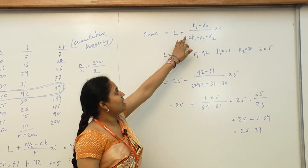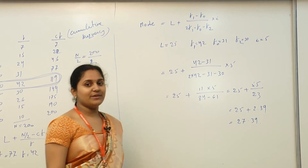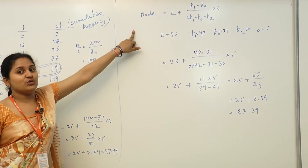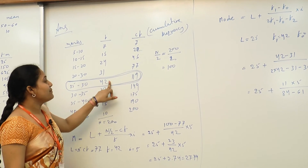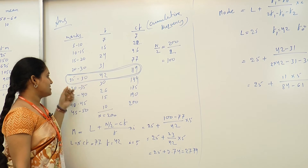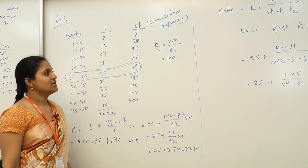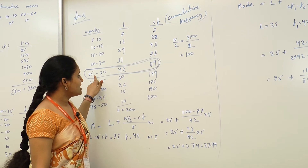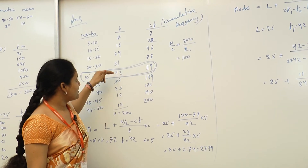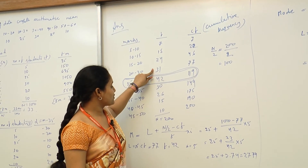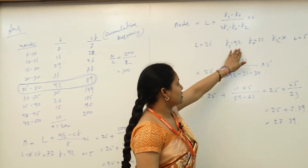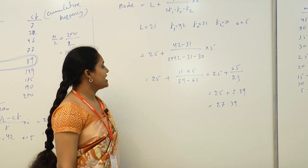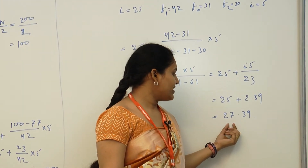Substituting values into the median formula: Median = 25 + ((100 − 77) / 42) × 5 = 27.74. For mode, the formula is: Mode = L + ((f₁ − f₀) / (2f₁ − f₀ − f₂)) × i. Since 42 is the maximum frequency, the modal class is 25–30. Here L = 25, f₁ = 42, f₀ = 31, f₂ = 30, i = 5. Substituting all values, mode = 27.39.